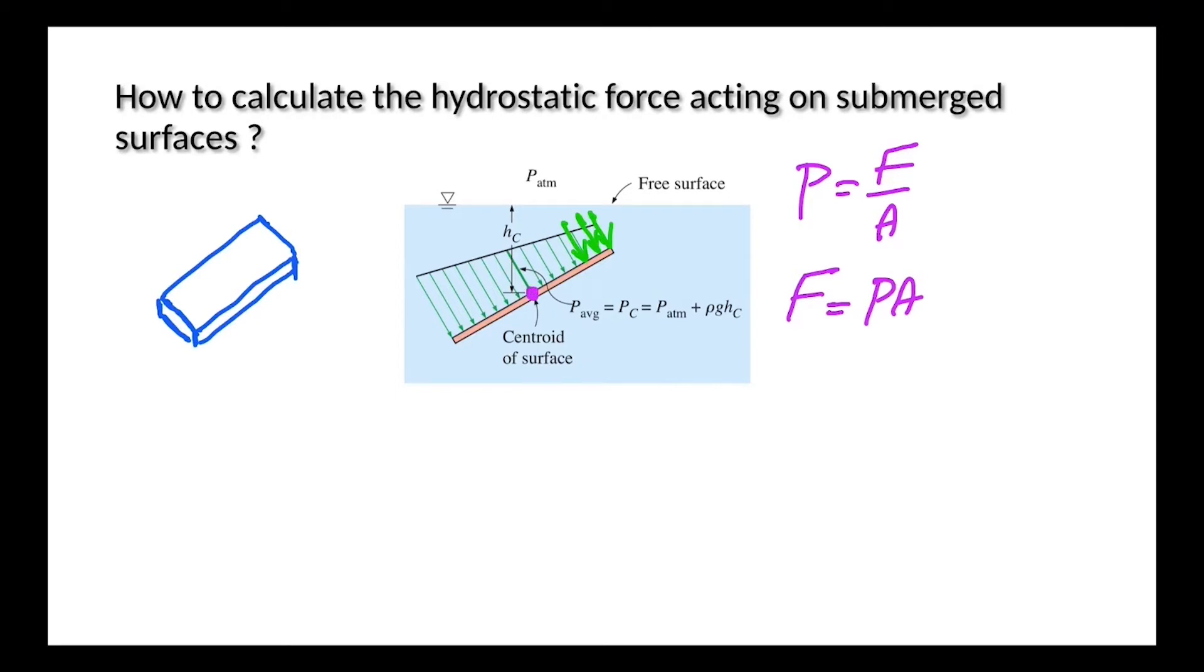This point is under the pressure of atmosphere and the pressure of the liquid above it. So the total pressure acting on this point, which is also known as the average pressure, is equal to P of atmosphere plus rho G HC. And HC is the vertical distance from the free surface to the centroid.